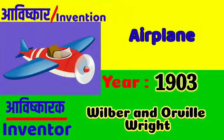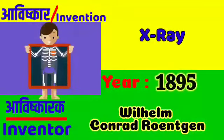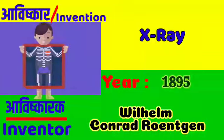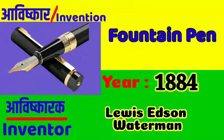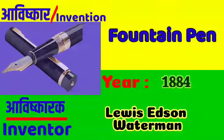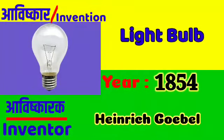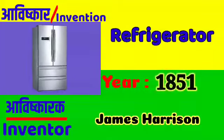Aeroplane: Wilbur and Orville Wright in 1903. X-Ray: Wilhelm Conrad Röntgen in 1895. Fountain Pen: Lewis Edison Waterman in 1884. Light Bulb: Heinrich Göbel in 1854. Refrigerator: James Harrison in 1851.